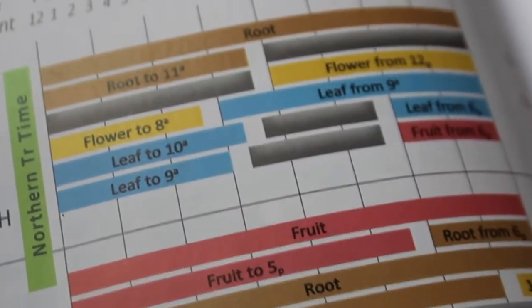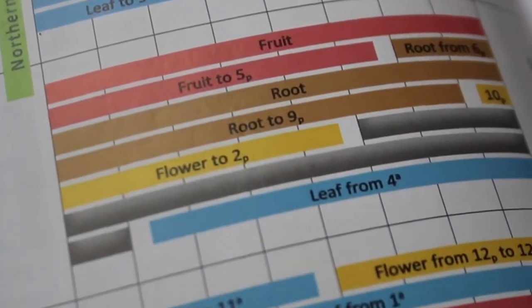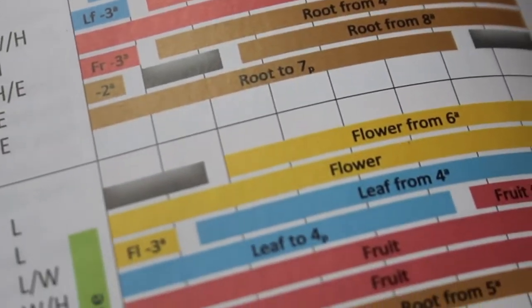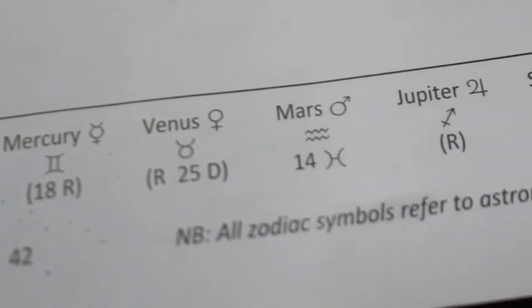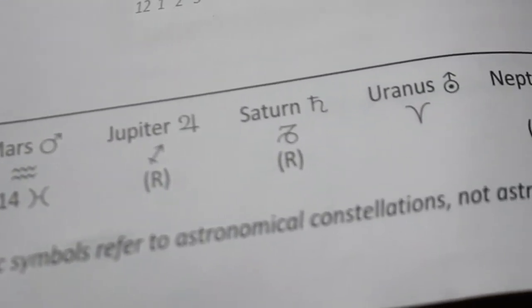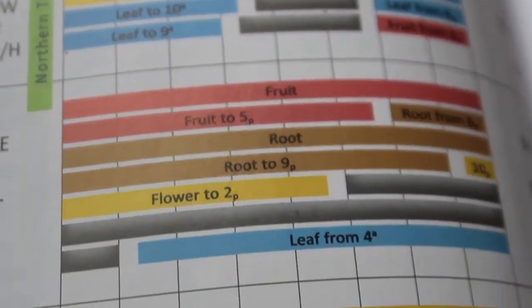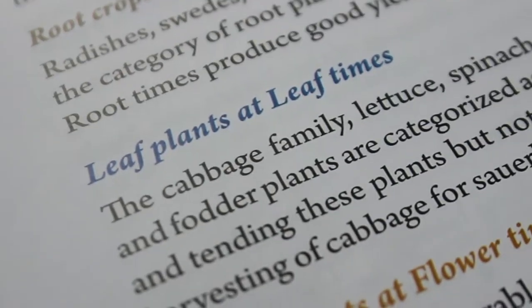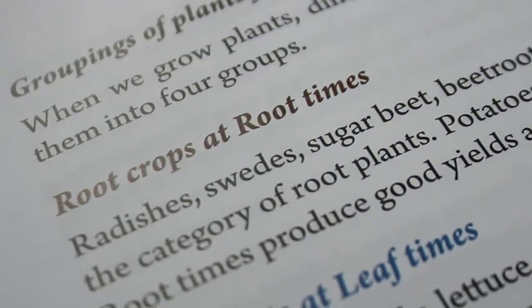So in this biodynamic almanac, it breaks down like a 14 to 17 day time period, and that's like your transplant window. That's the window where your plants will be most enhanced by the moon and the planetary cycles. Within that window, you'll get specific days where you grow specific crops. So you have a leaf day, a fruit day, a flower day, and a root day.